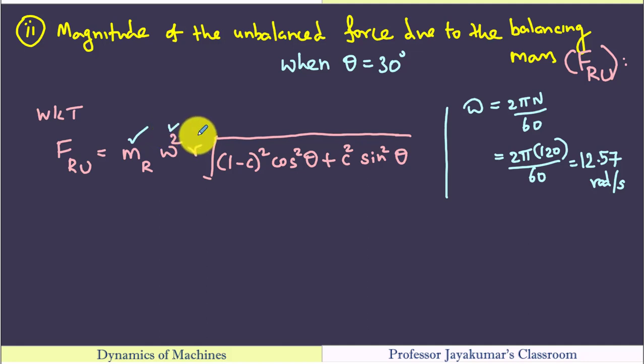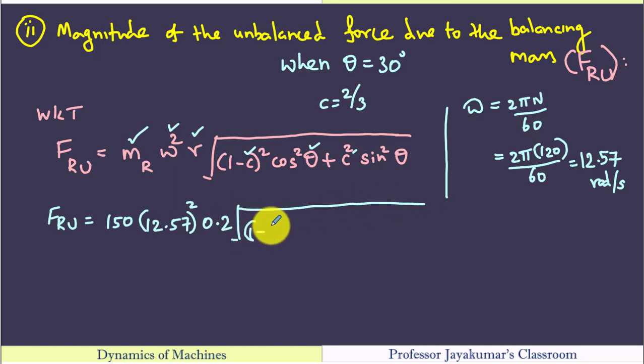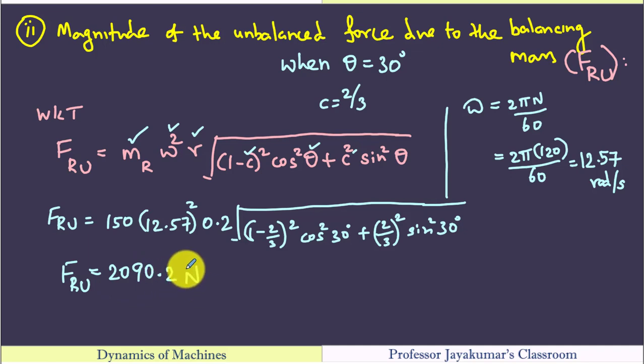So we know the omega value. We know the crank radius value 200 mm. We know the C value that means fraction of reciprocating mass to be balanced 2 by 3 in this problem. So we know C value. Theta value is given as 30 degree. By mere substitution we can find the value. I am getting the unbalanced force value as 2090.2 newton is my answer.